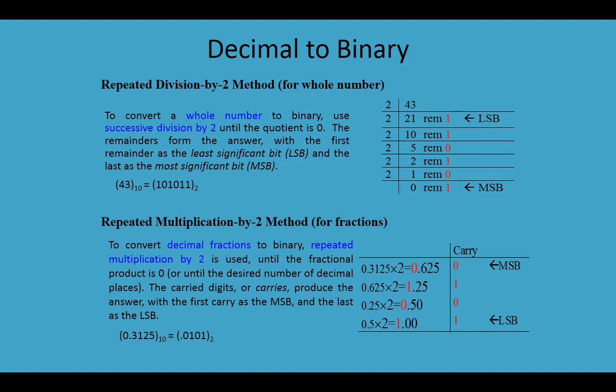Again divide 10 by 2: we get quotient 5 and we write remainder 0 on the right side. Again divide 5 by 2: we get quotient 2 and remainder 1. Again divide 2 by 2: we get quotient 1 and remainder 0. Since 1 is less than 2, we get remainder 1 on the right side — it is the most significant digit. Reading from bottom to top, we get 101011, which is the equivalent binary number with base 2.